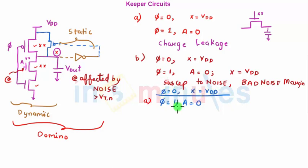Now phi became 1, A equal to 0, so X should be VDD. So what happens is technically in this case it used to lose out on its value because of charge leakage.